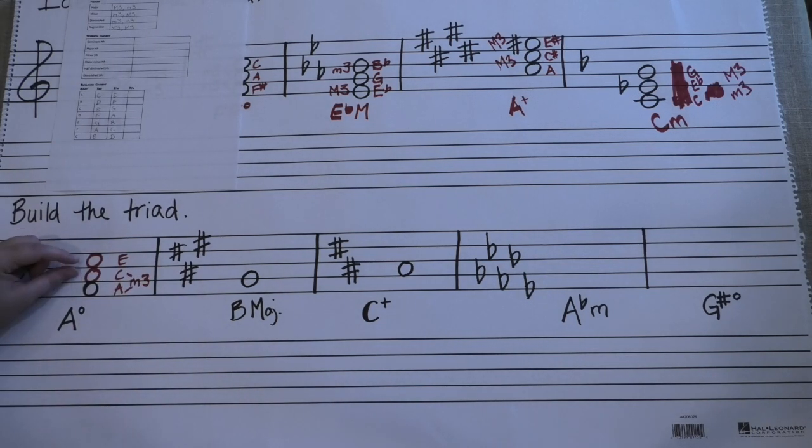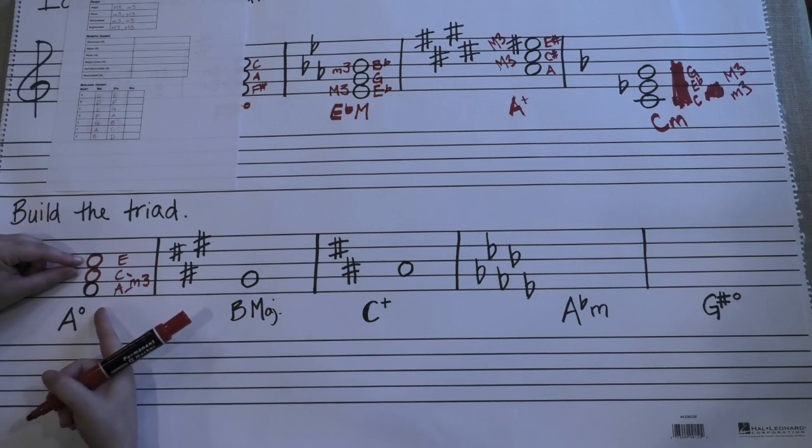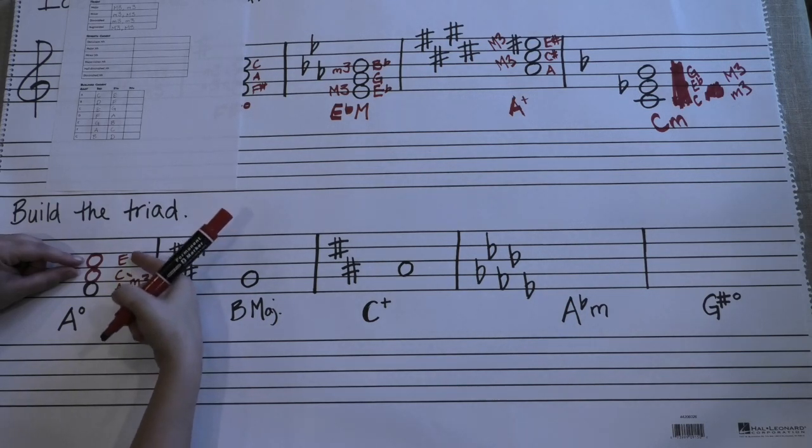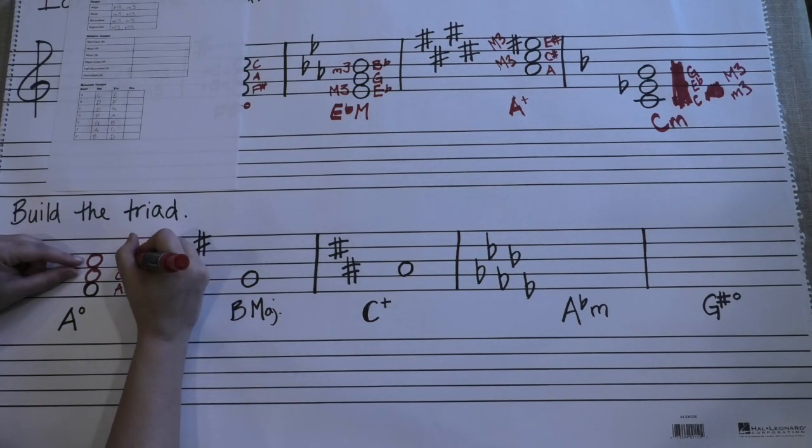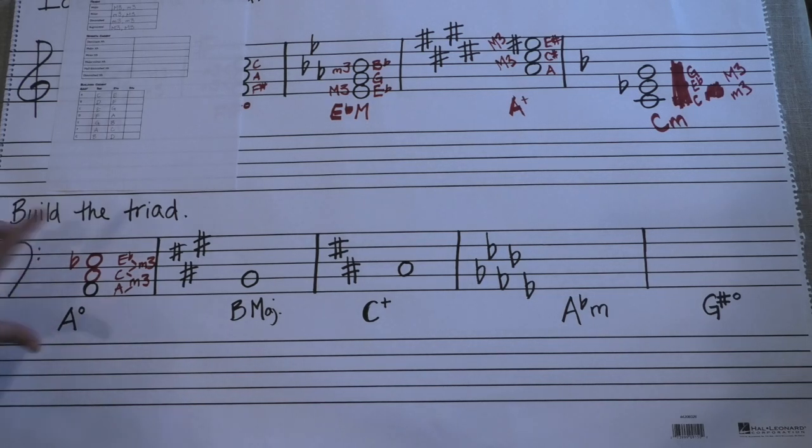A to C we'll find is a minor third, so so far so good. And then a C to an E, if you look it up and do your work, you'll find is a major third. So right now what we have is a minor triad, not a diminished one like we want. In order for this top interval to be a minor third, we have to turn this into an E flat. So let's add our flat over here. And now we have an A diminished chord.